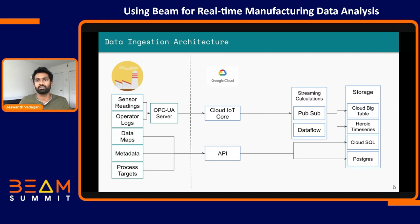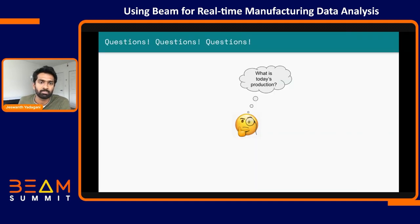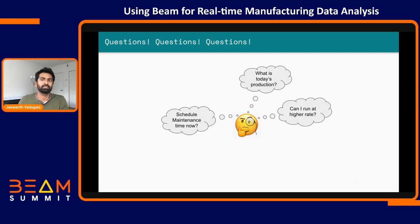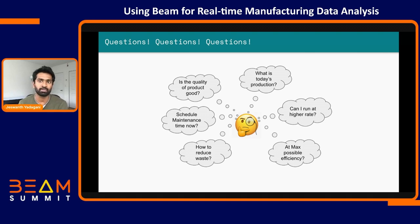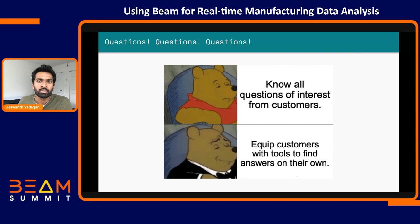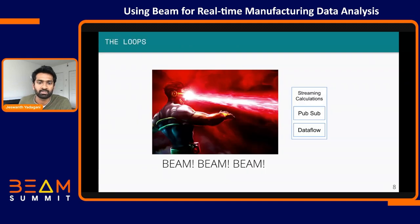Now that customer data is fed into our system, customers come up with very interesting questions: What is total production today? Can I run at a higher rate? Can I flag a maintenance window? How do I reduce waste during a cold start? Is product quality good? Are we running at maximum efficiency? It's practically impossible to know all the questions beforehand, and questions vary by factory structure. So instead of trying to anticipate every question, we built tools into the platform — and the core of all those tools is streaming metric calculations done using Apache Beam.